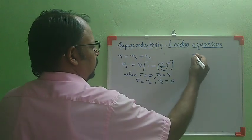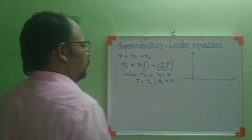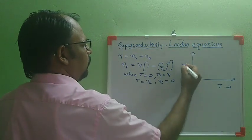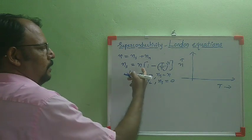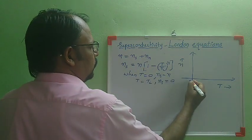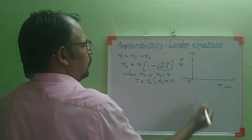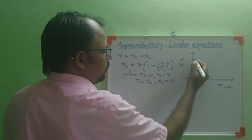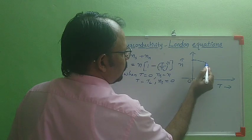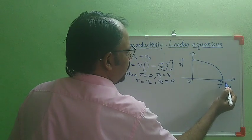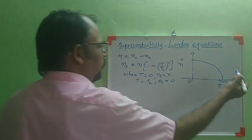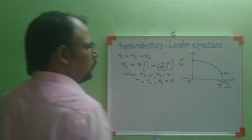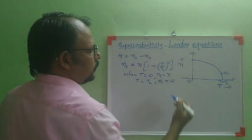When we draw the graph representing the variation of number density of electrons against temperature, temperature T is taken along the x-axis and number density of electrons is taken along the y-axis. At absolute zero temperature, the number density of super electrons equals the total number density of electrons, so it is maximum. As temperature increases, this number decreases, and at T = Tc, all electrons become normal electrons. This graph represents the variation of Ns, the number density of super electrons, with temperature.